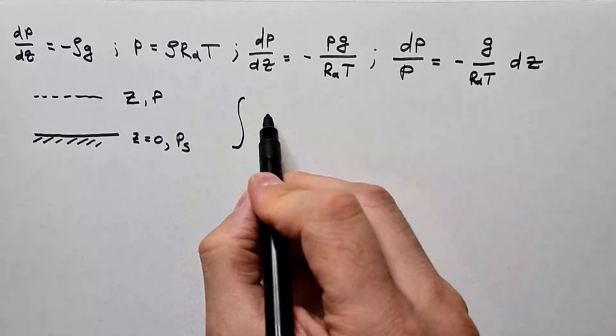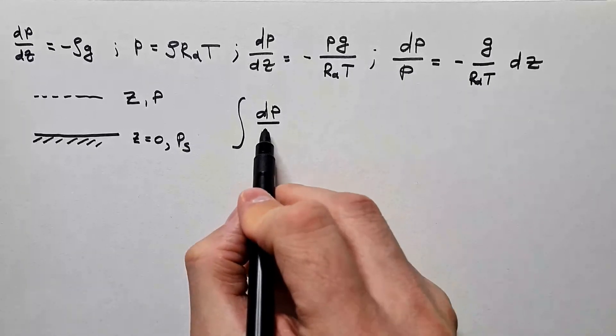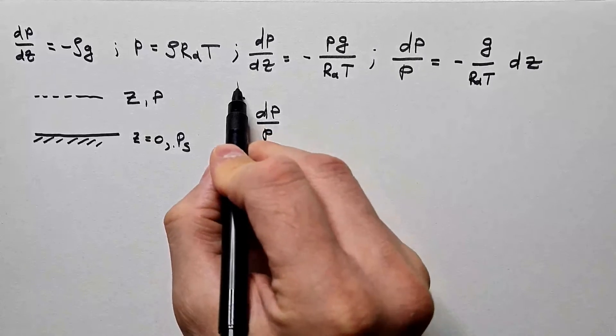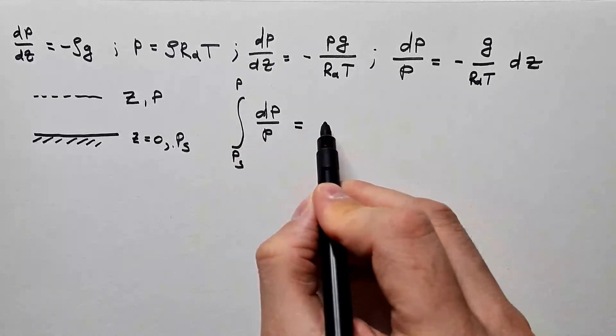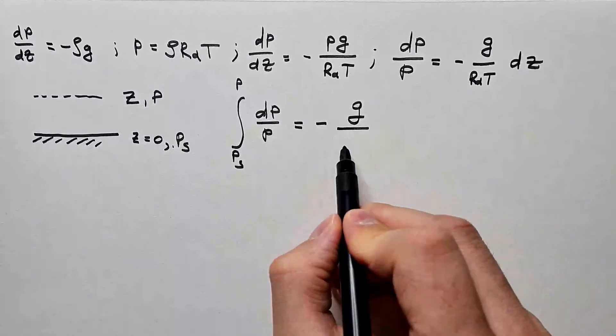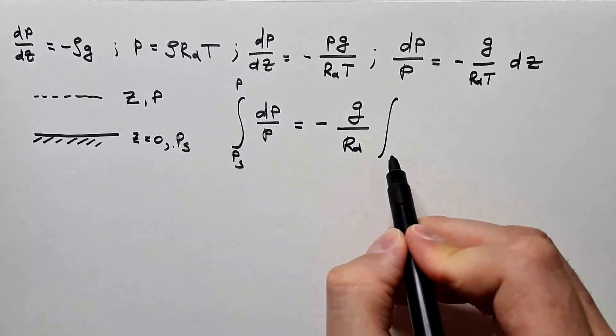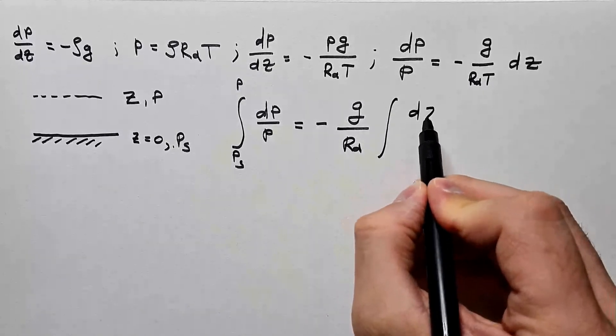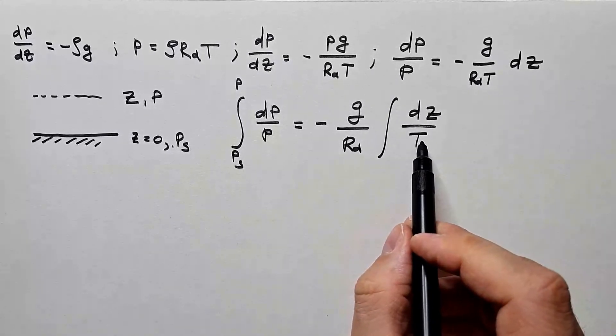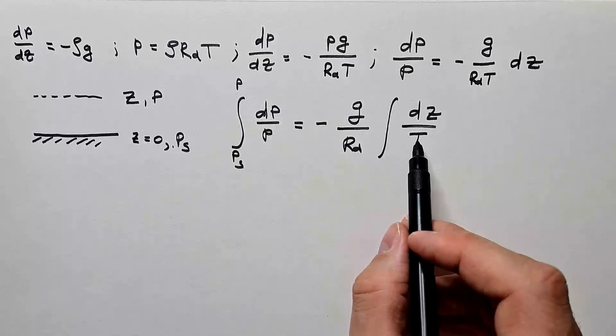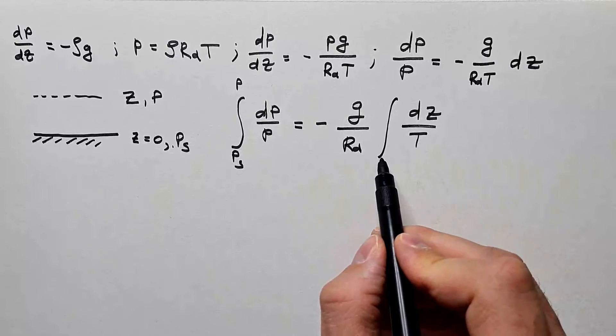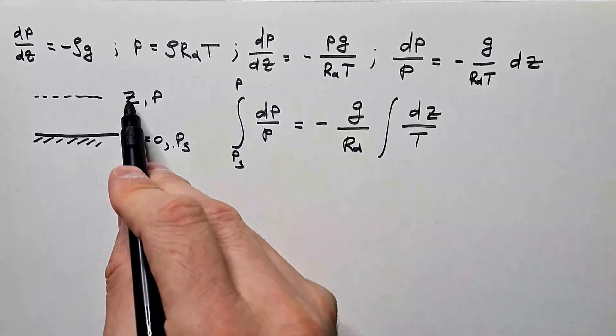Therefore, integral dp over p between ps and p equals minus g over Rd integral dz over T. Remember, temperature is some function of height, so we have to leave it under the integral, and height is between 0 to z.